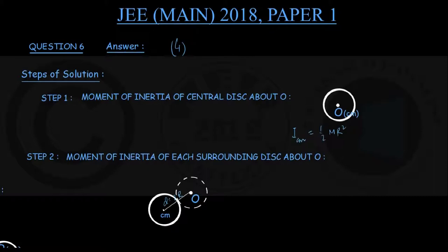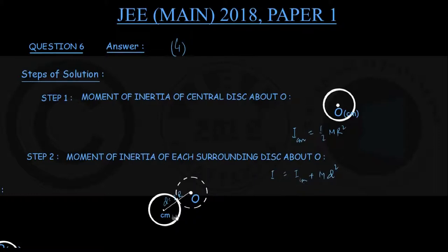To find the moment of inertia of a surrounding disk about point O, we require the parallel axis theorem in addition to the standard formula. The parallel axis theorem states: I = I_cm + md², where I_cm is the moment of inertia about an axis through the center of mass, m is the mass of the disk, and I is the moment of inertia about a parallel axis at distance d from the center of mass. For each surrounding disk, I'll call this moment of inertia I′. The I_cm contribution is (1/2)mR² as usual.